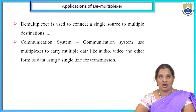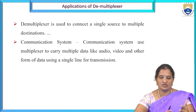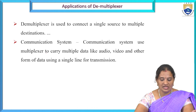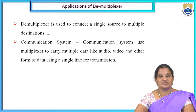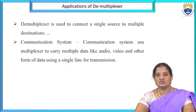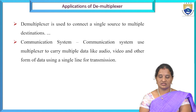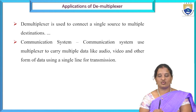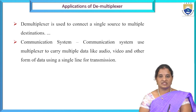Applications of demultiplexer include: connecting a single source to multiple destinations, communication systems that carry multiple data types like audio, video, and other forms of data using a single line for transmission. In this lecture, we have seen what is a multiplexer and demultiplexer, the various types of multiplexers and demultiplexers, their logic diagrams, Boolean functions, and applications. Thank you everyone.